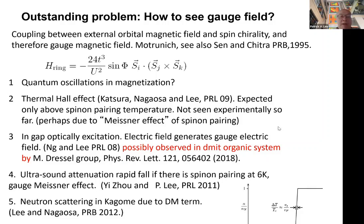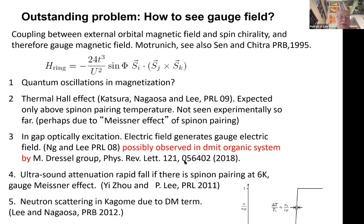Another prediction: gapless spinon excitations can produce electromagnetic absorption inside the Mott gap. Although spinons are charge-neutral, an external electric field produces an internal gauge field that excites them, so spinons effectively couple to light like dipoles. We predicted absorption going like ω² or some power law inside the Mott gap. There is some evidence for this from Dressel's group at terahertz frequencies, and also from Nugroho's group using Raman methods.